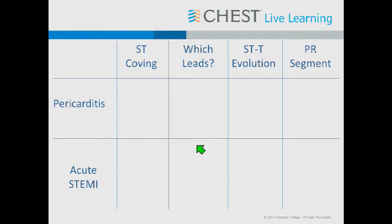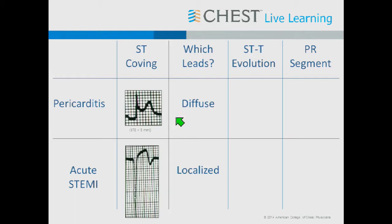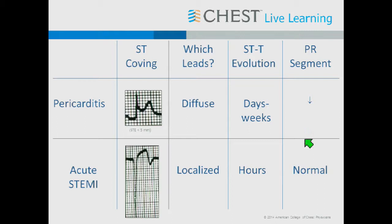How do we differentiate STEMI from pericarditis on the EKG? The shape of the ST segments matters. In STEMI, the ST segment is convex — coved upward — meaning it's hard to sit in the saddle. In pericarditis, it's concave — you can sit comfortably. STEMI changes are localized to a coronary distribution; pericarditis changes are more diffuse. In pericarditis, ST changes resolve or evolve over days to weeks rather than hours. PR segment depression is peculiar to pericarditis — you don't see it in STEMI.